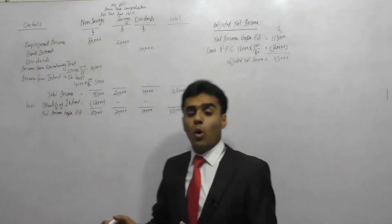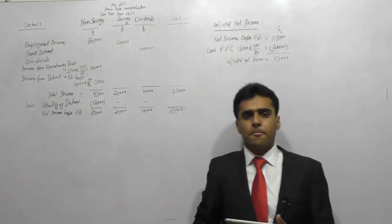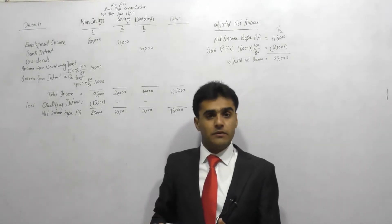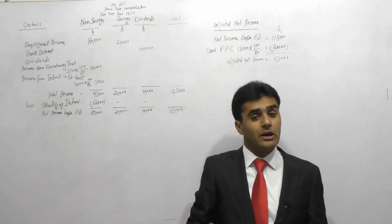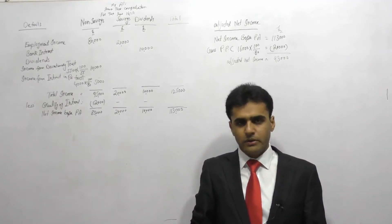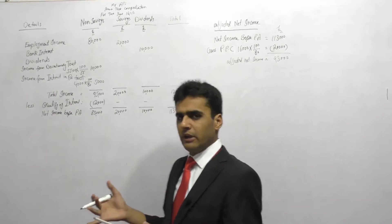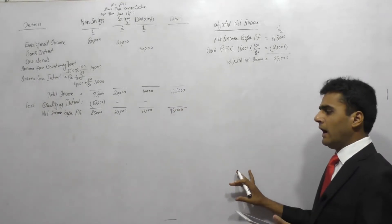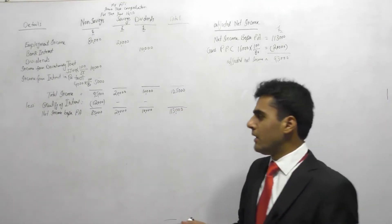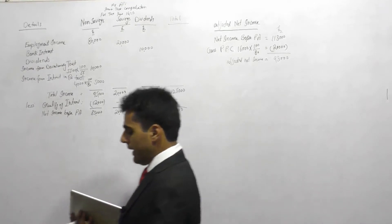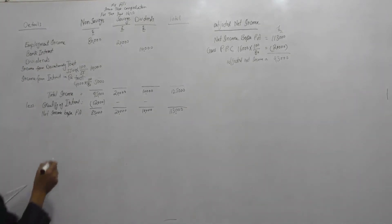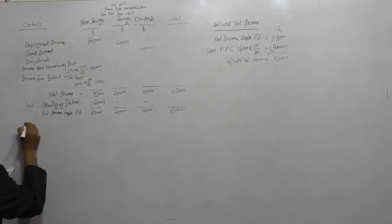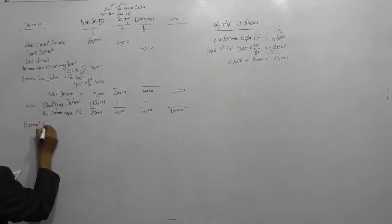His adjusted net income is £93,000, which is in excess of £60,000, so all of the child benefit he has received will be paid back to HMRC in the form of a child benefit charge. We will deal with that at the end of the question. For now, the next step in the income tax pro-forma is to deduct the personal allowance.